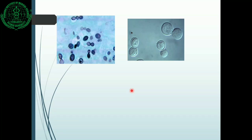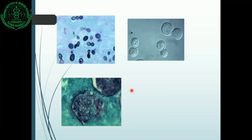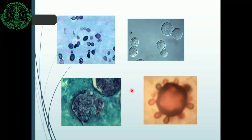In summary: Histoplasma capsulatum shows small intracellular yeast cells of 2 to 4 microns; Blastomyces dermatitidis shows broad-based budding yeast cells quite large at about 20 microns; Coccidioides immitis shows spherules with endospores and is the most virulent fungal pathogen, to be handled in a biosafety cabinet. Paracoccidioides brasiliensis shows the typical pilot's wheel appearance in the yeast form. All these are endemic diseases; cases are rarely found in India, though Histoplasma cases have been reported. Cases in India may have a history of travel to endemic areas.